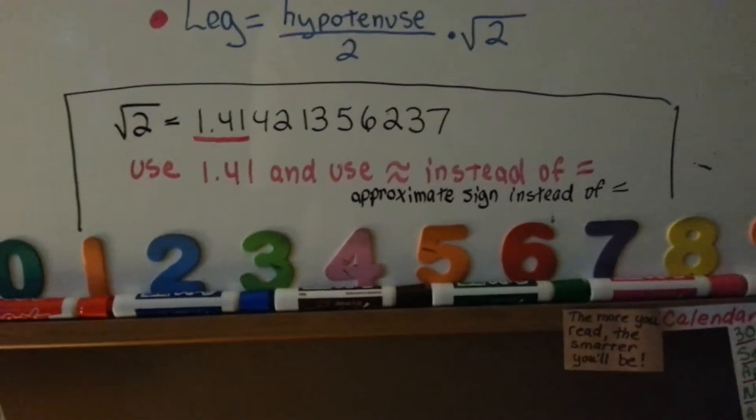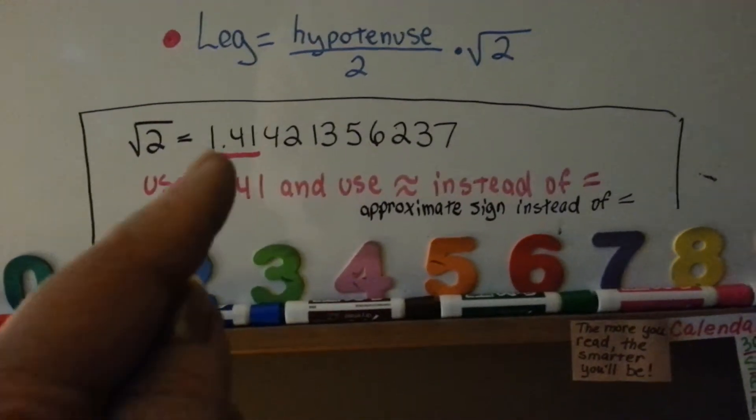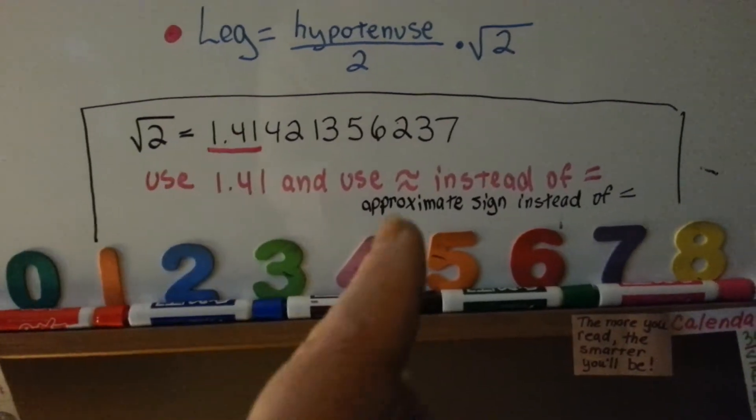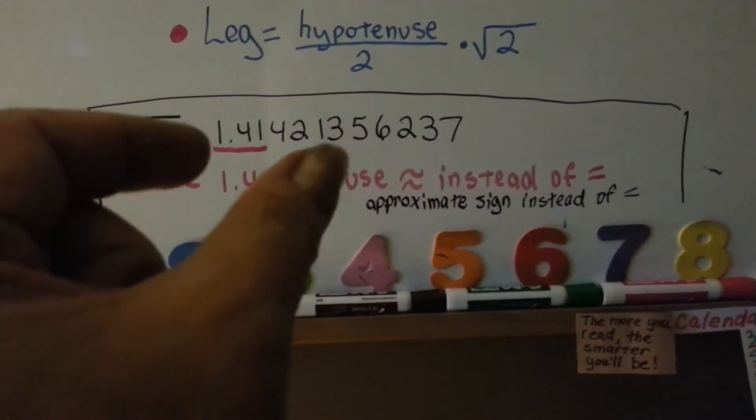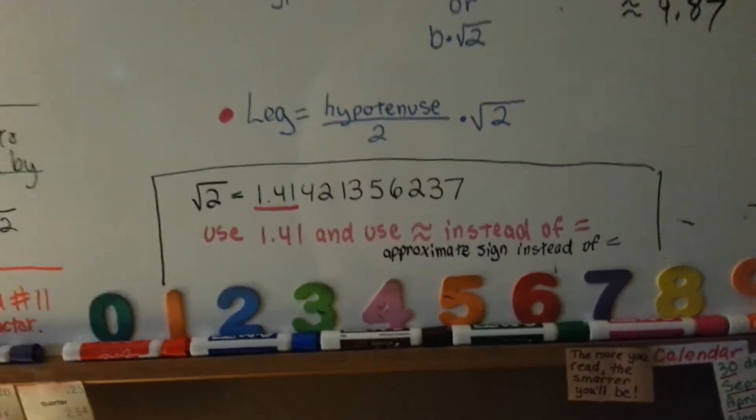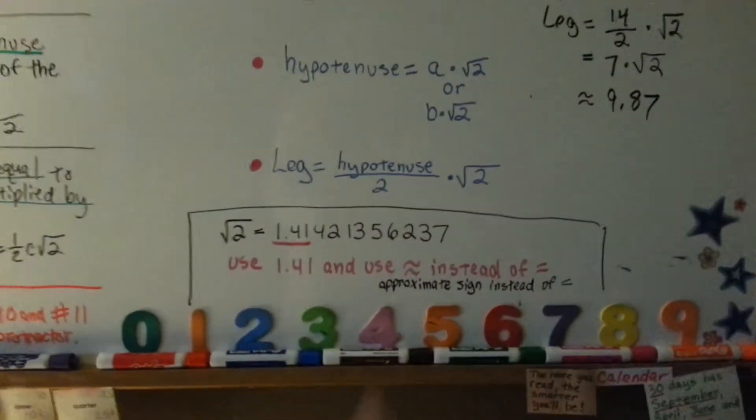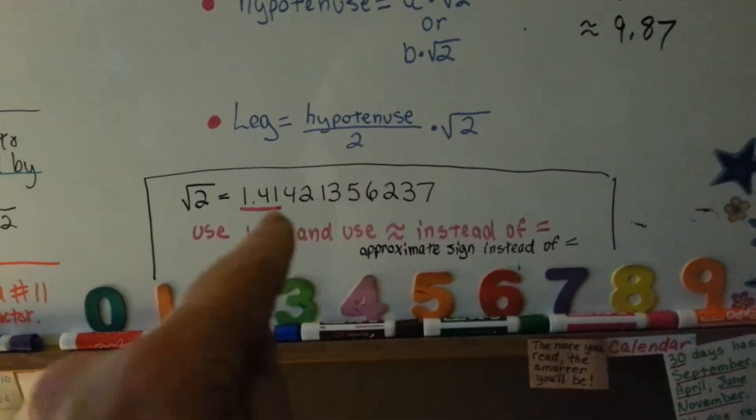And that's considered kind of silly in math. This is very acceptable to do 1.41 and change the equal sign to an approximate sign, and keep your answers short and simple. If anyone marks that wrong, they're wrong. This is acceptable.